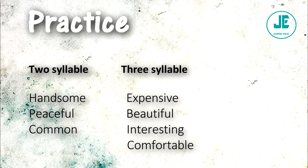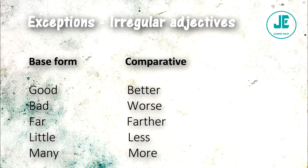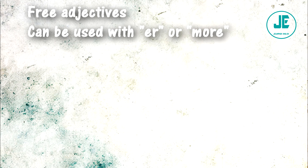Now I have some exceptions — adjectives that do not follow the rules. The only way to know these is to learn them. Here are the base form and the comparative form: good → better, bad → worse, far → farther, little → less, many → more.